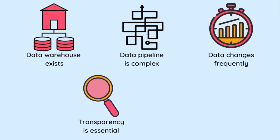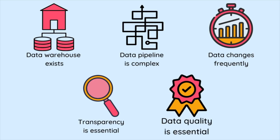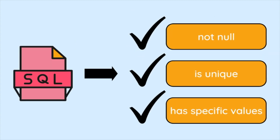You should consider dbt when transparency is essential to your organization, as dbt can automatically generate documentation for your pipeline. You should also consider it when data quality is essential, as dbt can test your models to help you catch errors early and ensure that your data is accurate.